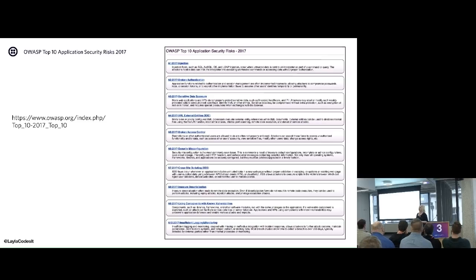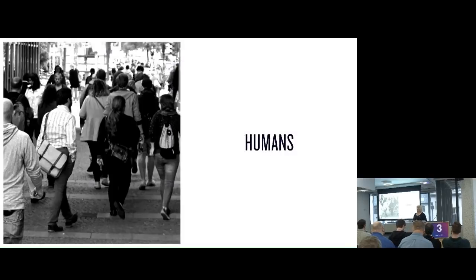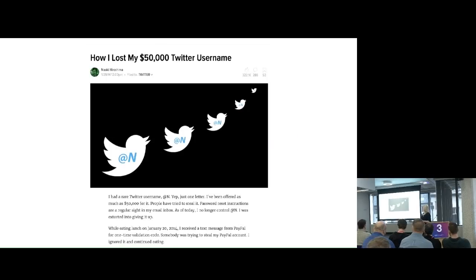But I really want to talk about the biggest security risk that we all have to deal with - and that is us, humans. Social engineering is something that happens quite often. As developers, we need to be thinking about what could be happening. I'm going to share a little story about Naoki Hiroshima. He had the Twitter handle @n - a pretty impressive, unique, rare Twitter handle.